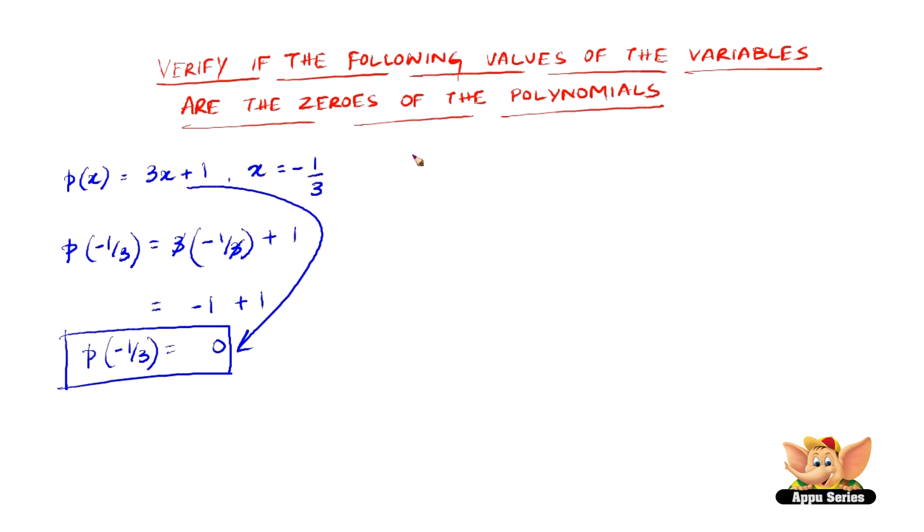Let us do another one. p of x equals x squared minus 1. x is minus 1 here.